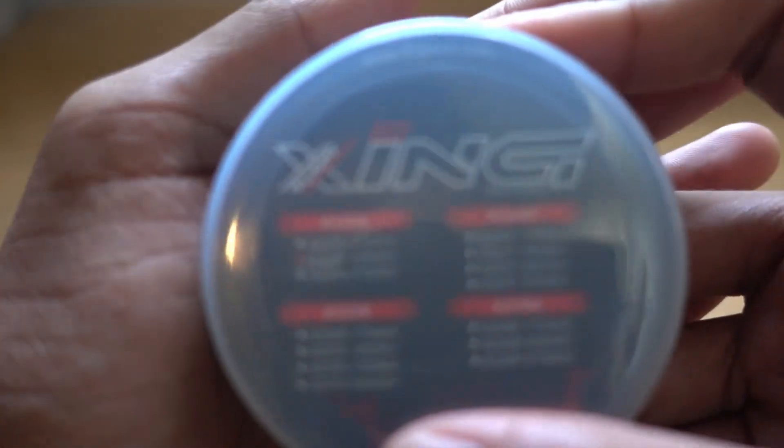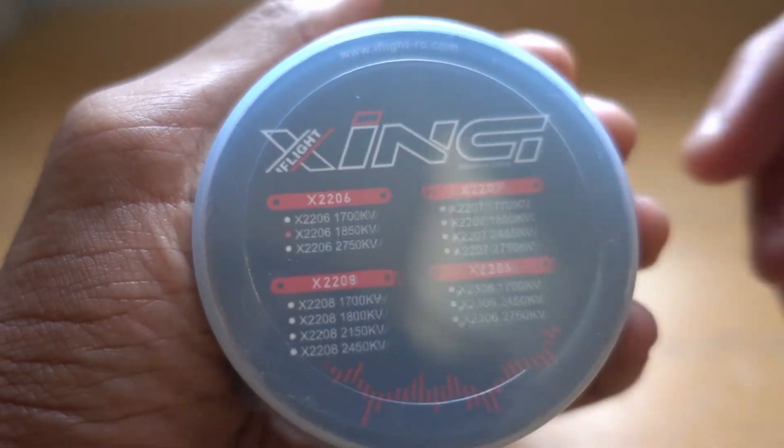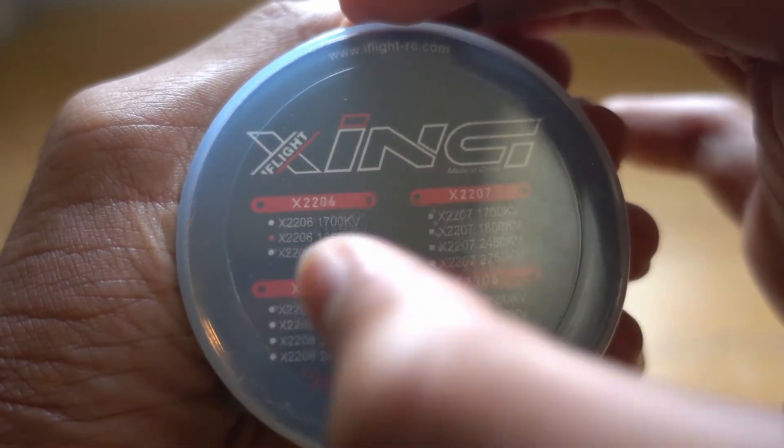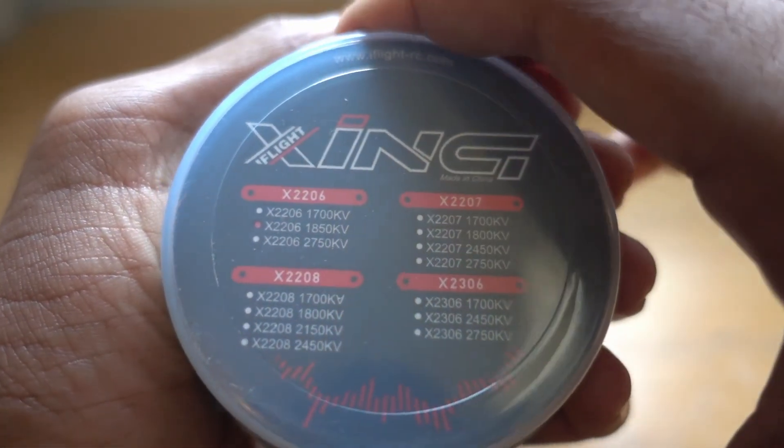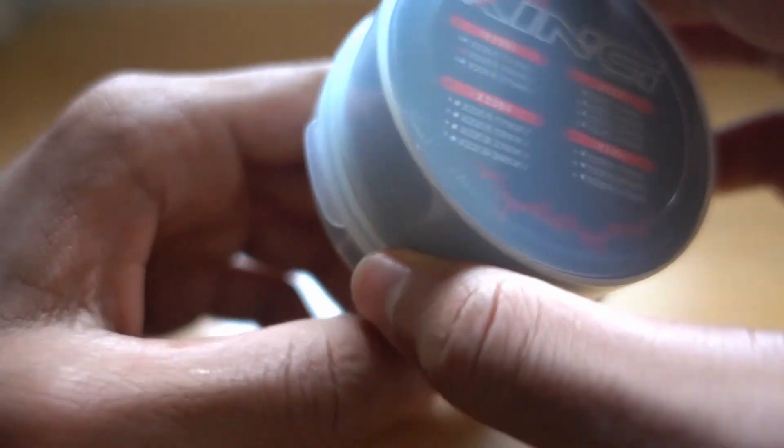This motor, as you can see in the back, the Zing is like a really large series of motors. So they have 2206, 7, 8, 2306. Now I think they have a 2408 and even a motor for wings and X-Class.